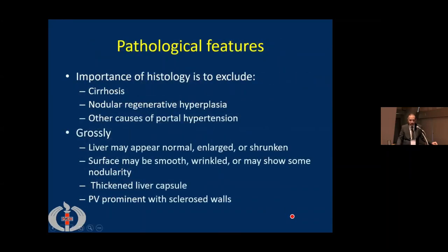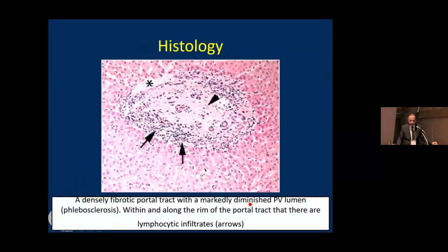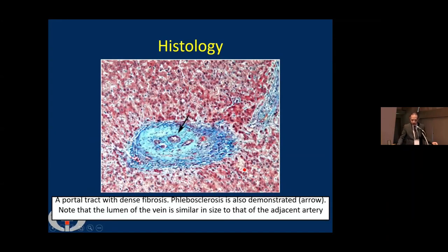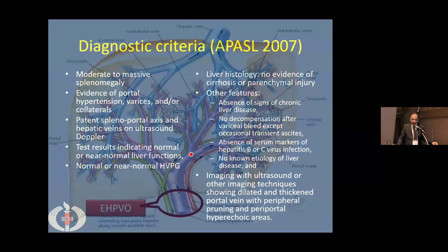Regarding pathologic features, we need to exclude cirrhosis. Grossly the liver appears normal. Histology shows what is known as phlebosclerosis, and diagnostic criteria have already been covered.